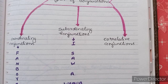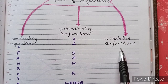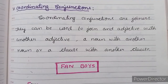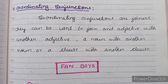Now let's learn about the types of conjunctions. Basically in English there are three types: coordinating conjunctions, subordinating conjunctions, and correlative conjunctions. Coordinating conjunctions are joiners — they can be used to join an adjective with another adjective, a noun with another noun, or a clause with another clause.